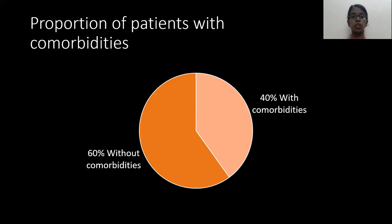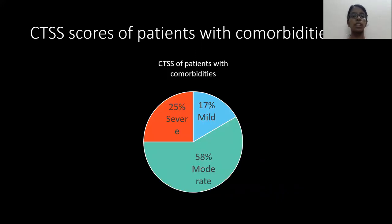Coming to the proportion of patients with comorbidities: majority of the patients did not have any comorbidities, whereas 40% of the patients had comorbidities. CTSS scores of patients with comorbidities were as follows: the majority, that is 58%, had moderate disease, 25% had severe disease, and 17% had mild disease.